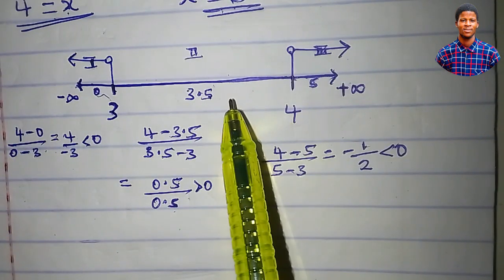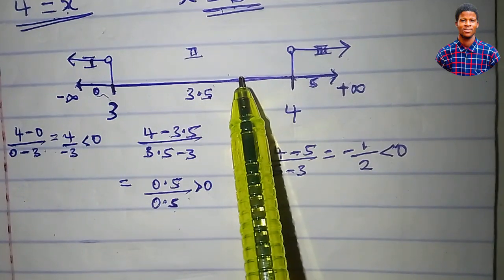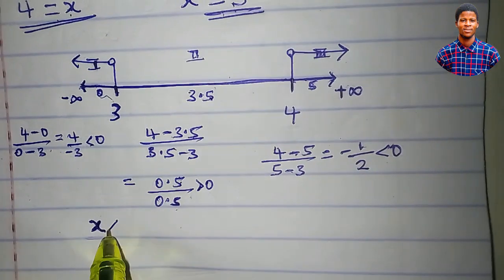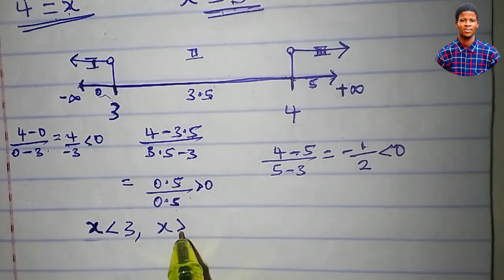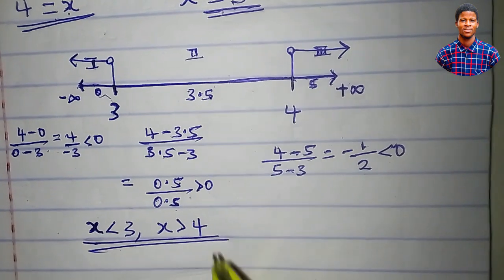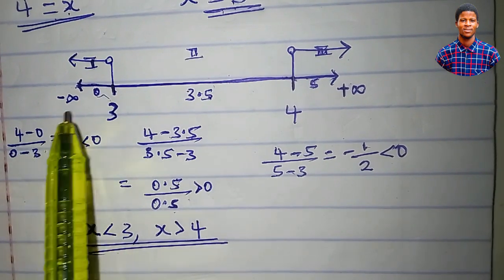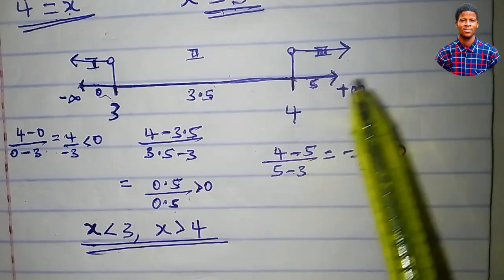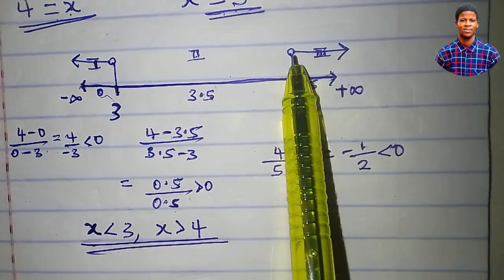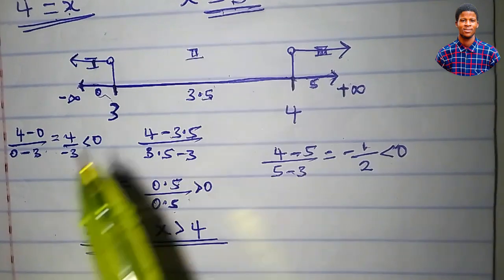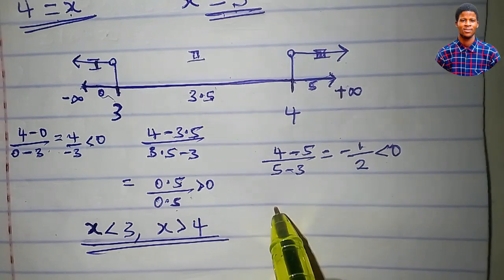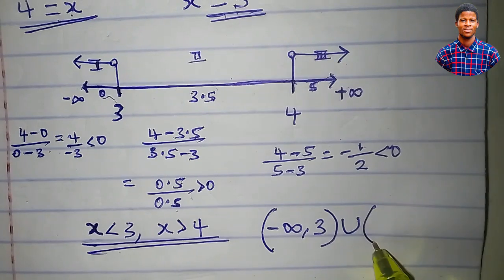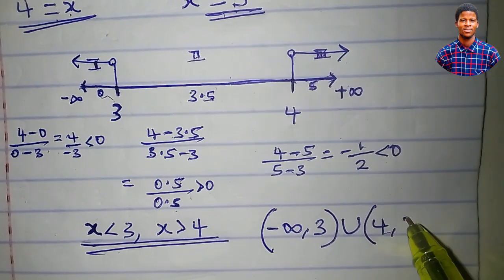The range of values of x that satisfy this inequality is: x less than 3, or x greater than 4. We can write this in interval notation as: negative infinity to 3, union 4 to positive infinity. Note that 3 and 4 are not included in this set.